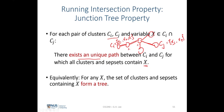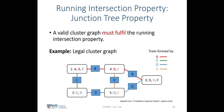Equivalently, for any random variable x, the set of clusters and subsets containing x forms a tree. A valid cluster graph must fulfill the running intersection property. Here is an example of a legal cluster graph with random variables a, b, c, d, and e forming five clusters. We can see that trees are formed by respective random variables b, c, d, e, and a. Since a appears in only one cluster, it fulfills the running intersection property. For b, the clusters and subsets containing b form a chain, which is also a valid tree.